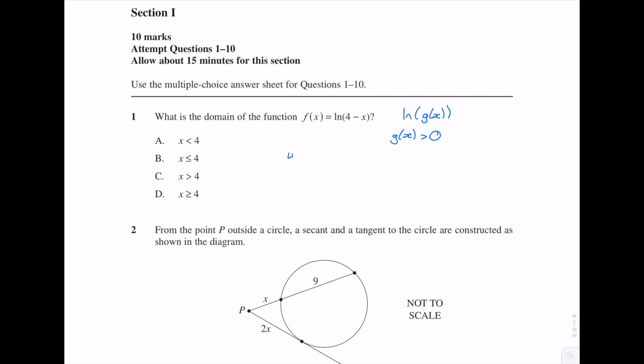So that means in this case we have 4 - x is greater than 0. Rearranging gives us x is less than 4. So A is the correct answer.